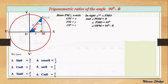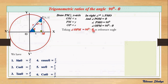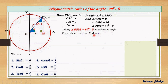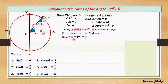Now in this right-angle triangle OPM, taking angle OPM which is 90° minus theta as the reference angle, the perpendicular is OM (opposite to the reference angle) whose value is x. The base is PM whose value is y, and the hypotenuse is opposite the 90° angle whose value is r.